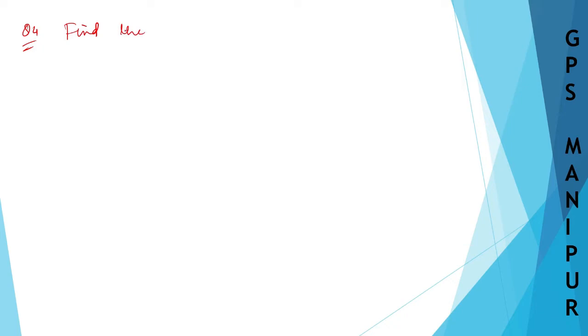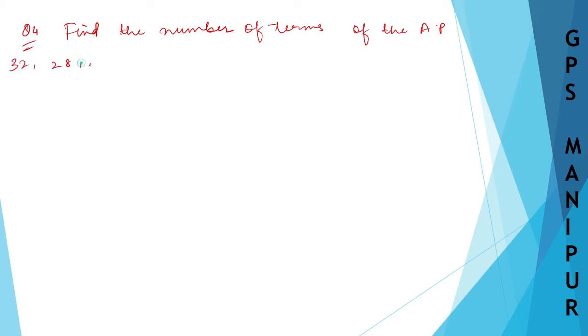Now we are doing Exercise 6.2, Question number 4. The question is: find the number of terms of the AP 32, 28, 24, 20... of which the sum is 132.